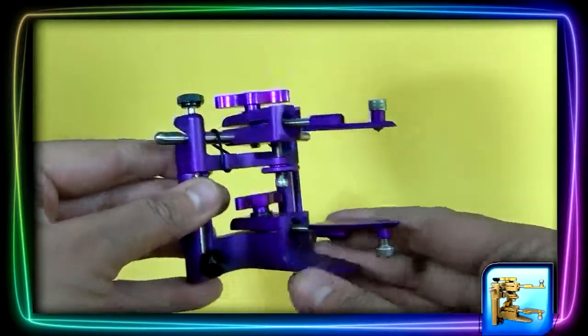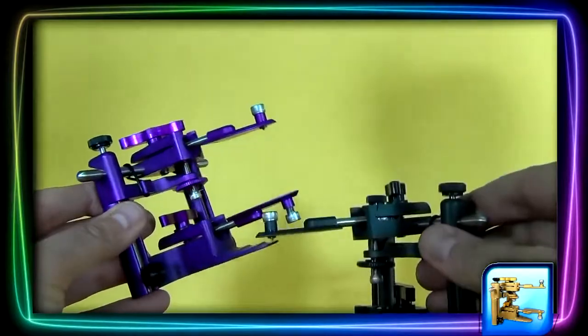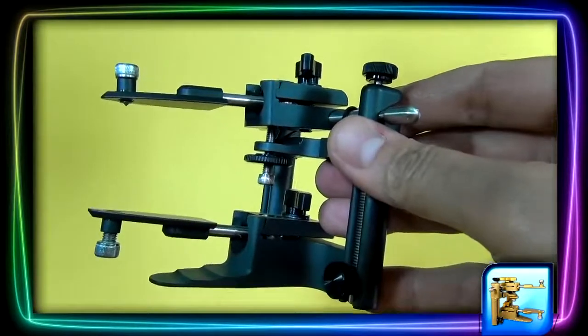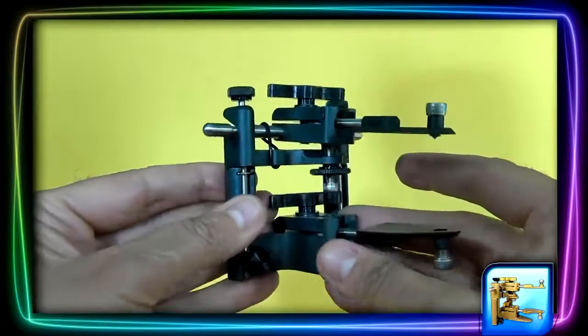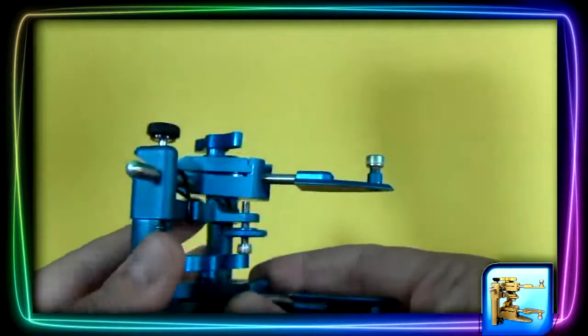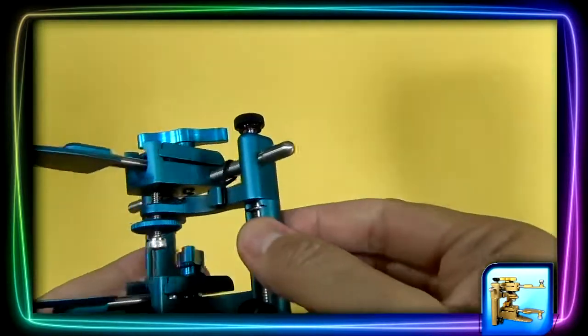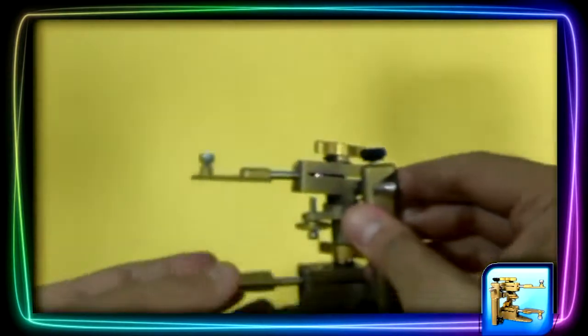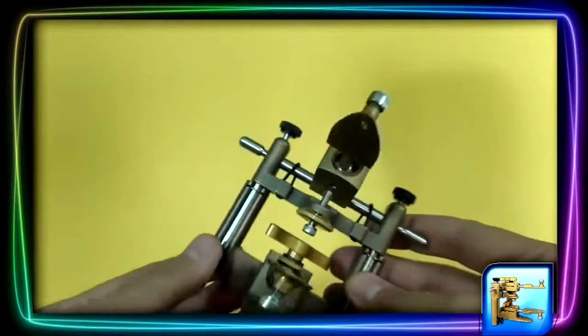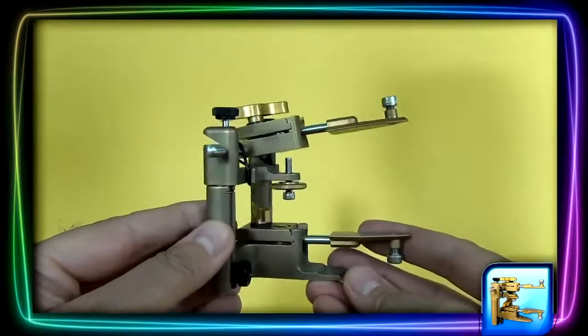Now, before I give you a demonstration, I'd like to introduce the variety of colors that the Enzo Articulator comes in. Here we have a black one. Our next color is a blue turquoise, which is very nice. We have one in gold. One in red.